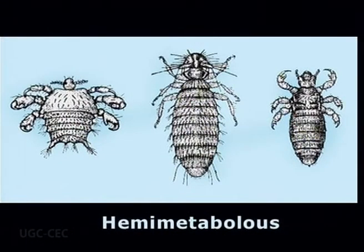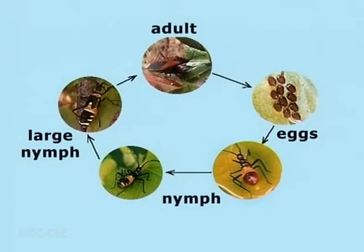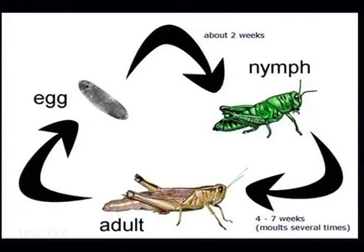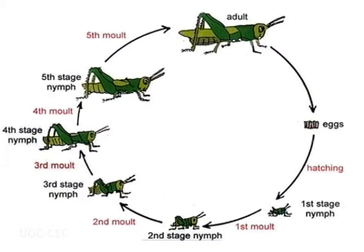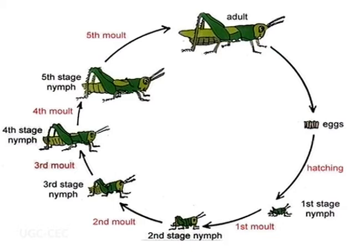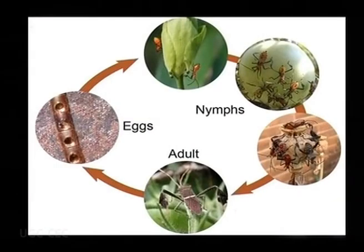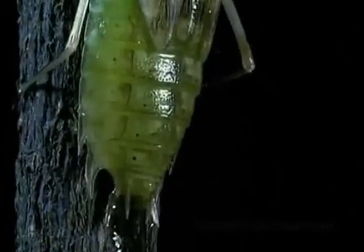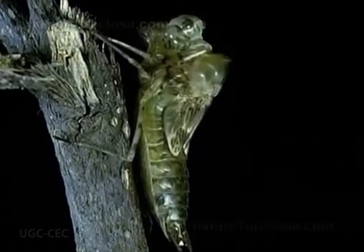Hemimetabolous, also called half metamorphosis. In hemimetabolous insects, immature stages are called nymphs. Development proceeds in repeated stages of growth and ecdysis, that is molting. These stages are called instars. The juvenile forms closely resemble adults but are smaller and lack adult features such as wings and genitalia. This process is known as partial or incomplete metamorphosis. The differences between nymphs in different instars are small, often just differences in body proportions and the number of segments, although external wing buds will form in later instars.